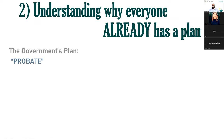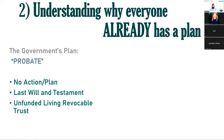The next step is understanding that everyone already has a default plan for all this stuff, because there has to be one - people pass away. The government has set up a default plan called probate, and it goes to probate court. If you have absolutely nothing set in place - no will, no trust - then it will go to probate court. We're going to go through what the probate process looks like in the next step.